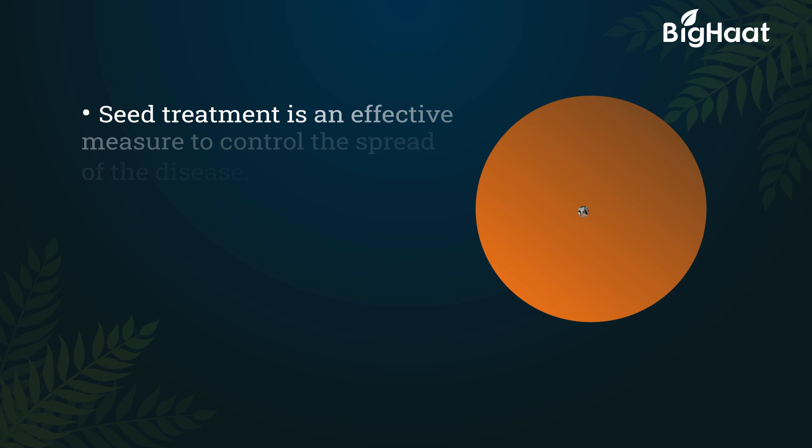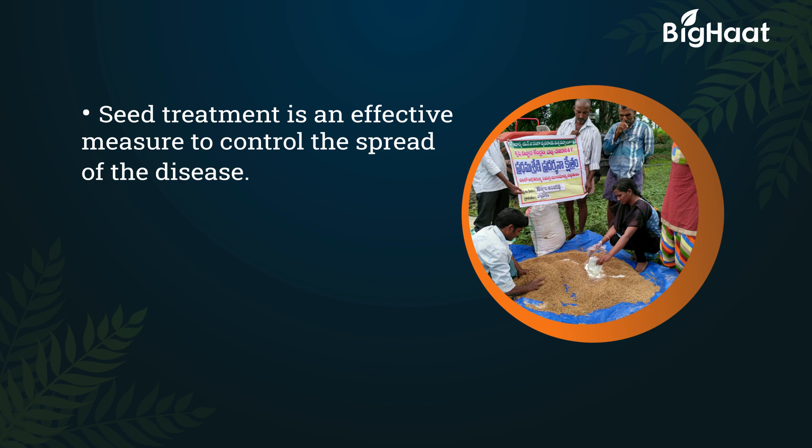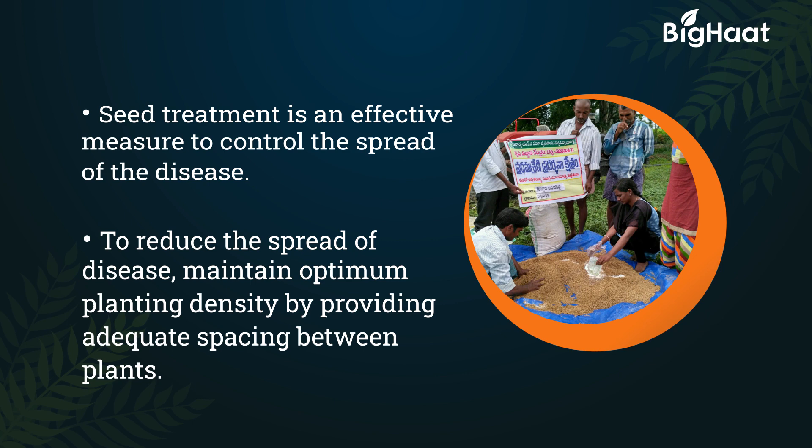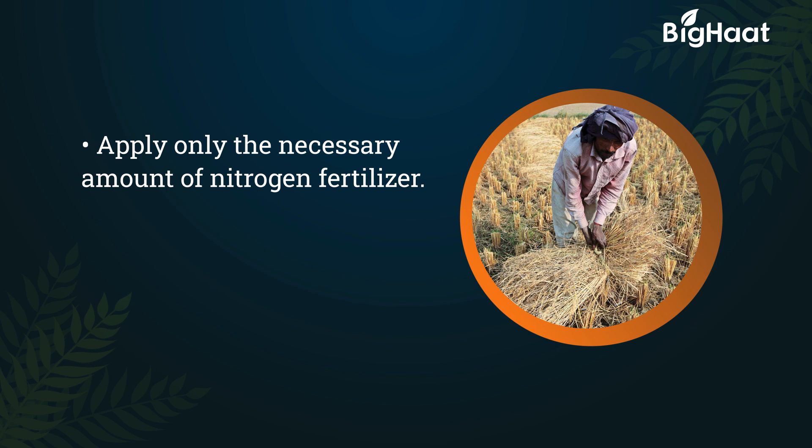Seed treatment is an effective measure to control the spread of the disease. To reduce the spread, maintain optimum planting density by providing adequate spacing between plants. Apply only the necessary amount of nitrogen fertilizer, and maintain field hygiene by removing all plant debris.